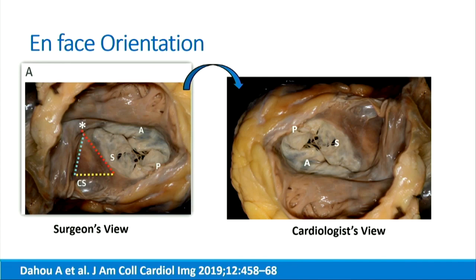The use of transthoracic three-dimensional imaging helps identify the location of the pacemaker. Our American guidelines have advocated orienting the three-dimensional image — the en face view — in the surgeon's view with the septal leaflet toward the six o'clock imaging plane. However, most of us dealing with transcatheter devices have elected to not do the extra rotation required to get into the surgeon's view, but to leave it in what we call the cardiologist's view. This leaves the anterior leaflet at the six o'clock position, the septal leaflet on the right side of the screen, and the posterior leaflet to the left — equivalent to what we would see in a transgastric view.